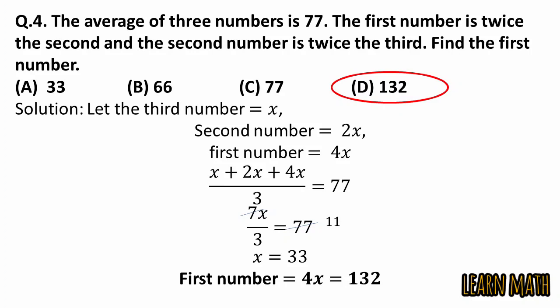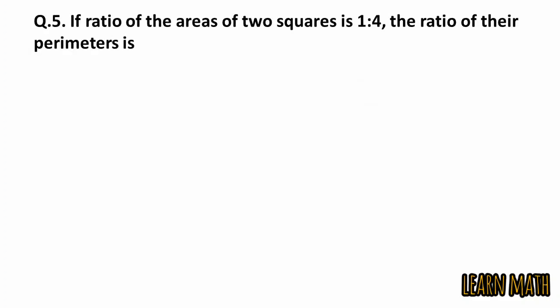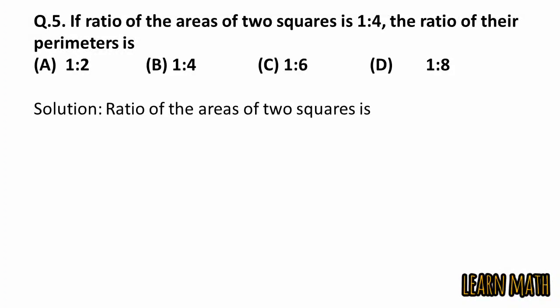The fifth question is if ratio of the areas of two squares is 1 ratio 4, the ratio of their perimeters is. The ratio of the areas of two squares is 1 ratio 4. First we need to find the sides.